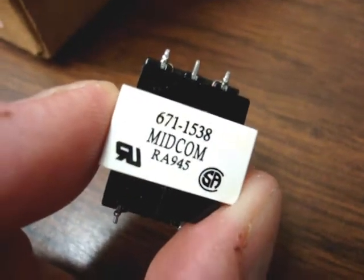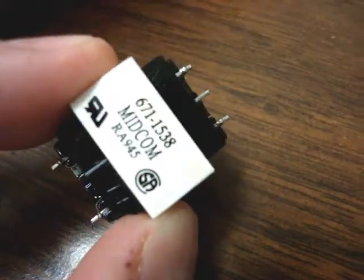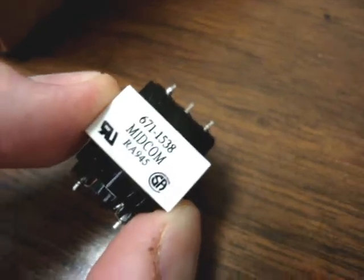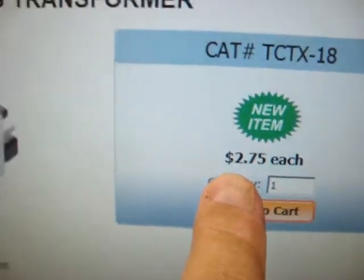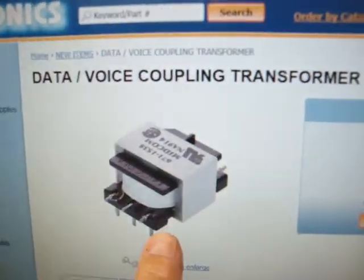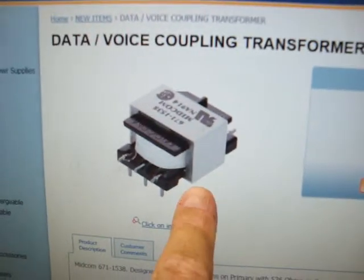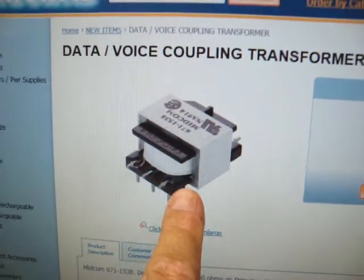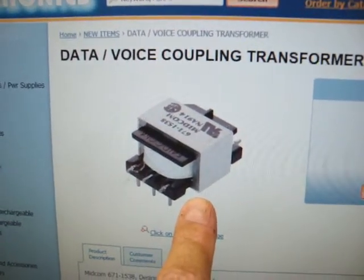The Midcom 671-1538 here is an excellent transformer, 600 to 600 ohm, and you can see the size of it. I got mine for $2.75 each at this company, All Electronics. It says it's a data voice coupling transformer, but this clearly does plus 4 dBu from 40 Hertz to 40 kilohertz. It's a great transformer for 600 ohms.